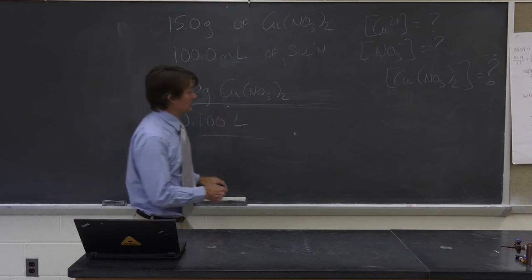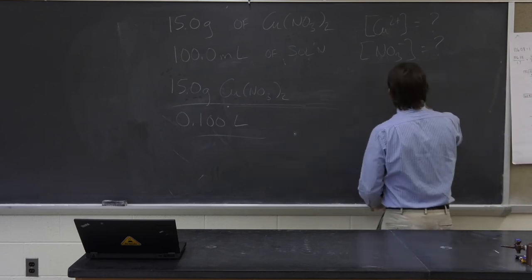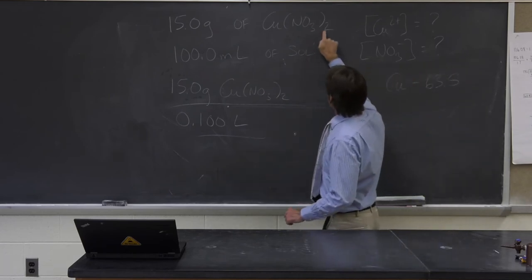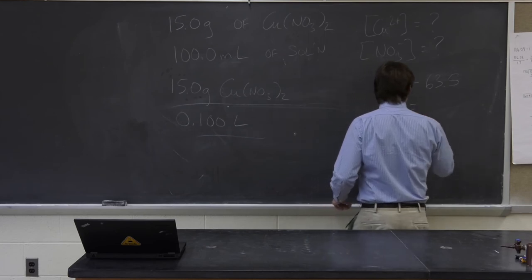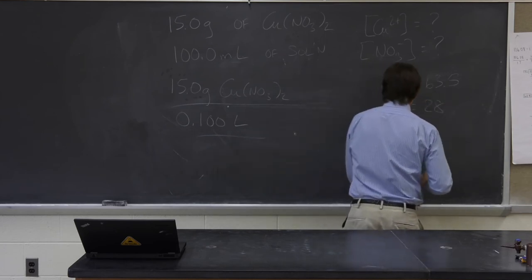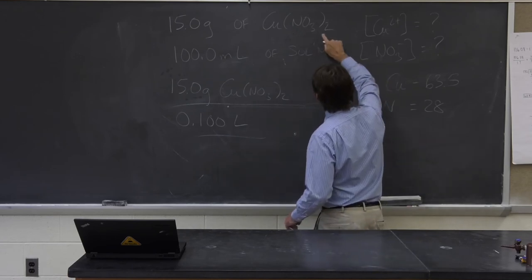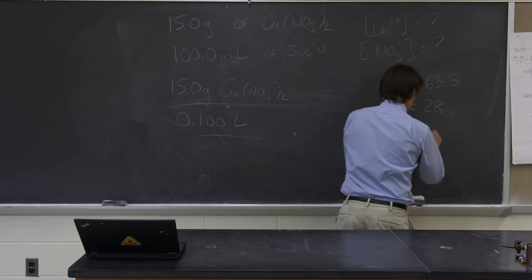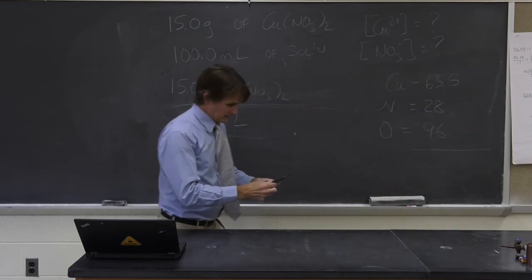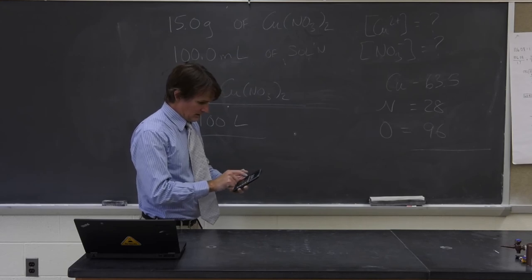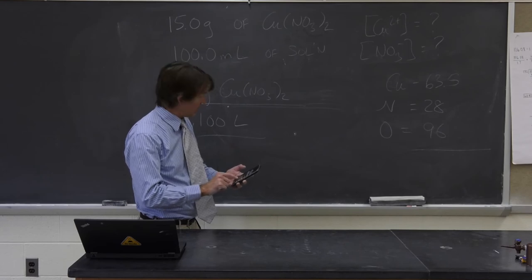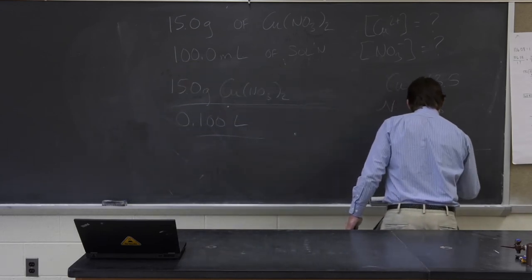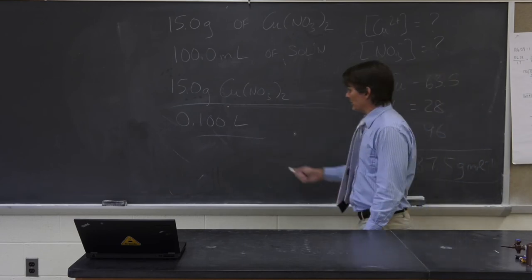Looking up the molar masses: copper is 63.5, I have two nitrogens — 2 × 14 = 28, and I have 6 oxygens (2 × 3 = 6) — 6 × 16 = 96. So the molar mass of copper(II) nitrate is 63.5 + 28 + 96 = 187.5 grams per mole.